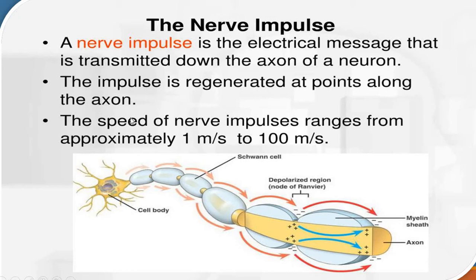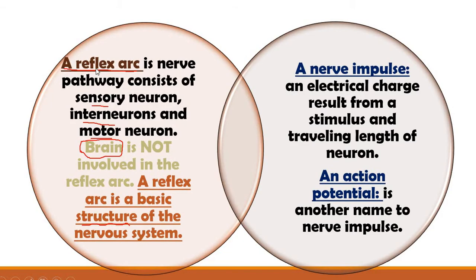The speed of this nerve impulse varies. The speed of this nerve impulse varies from one meter per second to a hundred meters per second. A reflex arc includes the pathway which consists of sensory neurons, interneurons, and motor neurons. And this reflex arc is the basic structure of the nervous system.